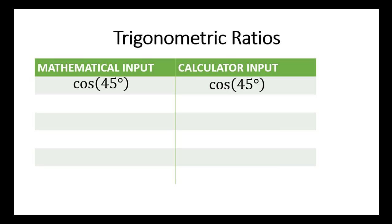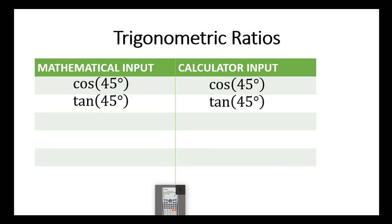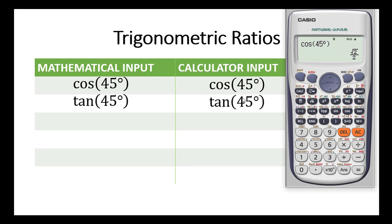Let's go to the next one: tan 45 degrees. You simply key the same thing into your calculator — you type tan 45. I may choose to add a degree symbol or not; already the calculator is in degree mode, so I can choose to leave that out. Then I close the bracket and press equal to. The answer is 1 — tan 45 degrees is simply 1.